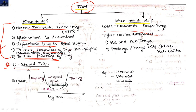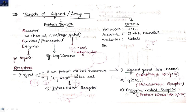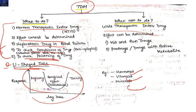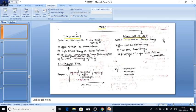The U-shaped DRC is seen with hormones, vitamins, and minerals. This concludes the discussion on the dose-response curve. In the next video we will discuss the receptor part. Thank you for watching, best of luck, and please subscribe to our channel for more videos.